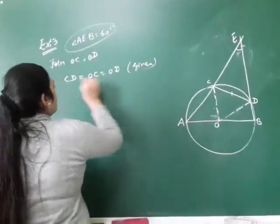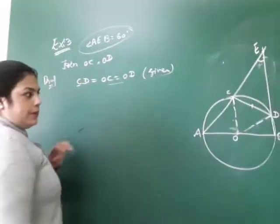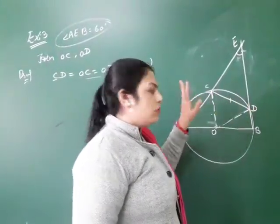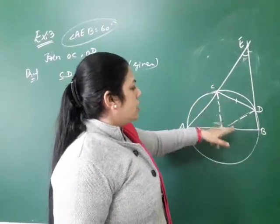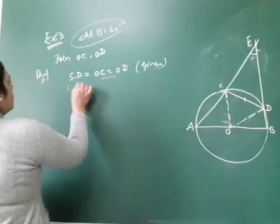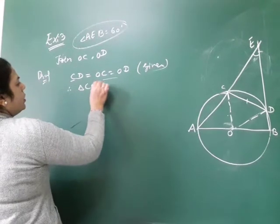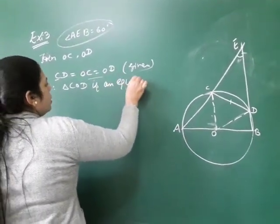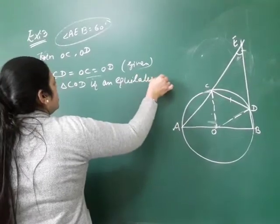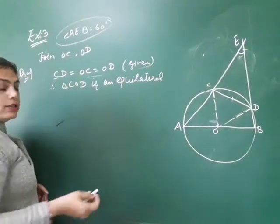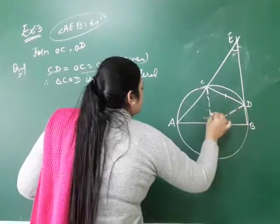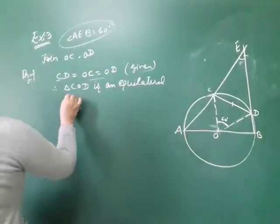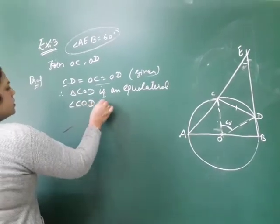The chord CD is equal to the radius. OC and OD are also radii — from the center to points on the circle, they are radii. So CD equals OC equals OD. Therefore triangle COD is an equilateral triangle. Each angle of an equilateral triangle is 60°, so angle COD is 60 degrees.